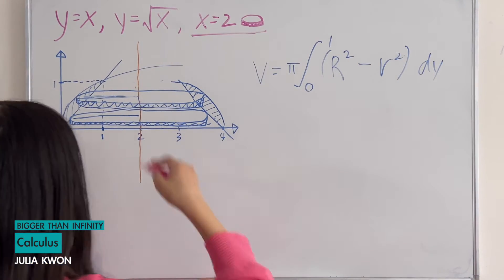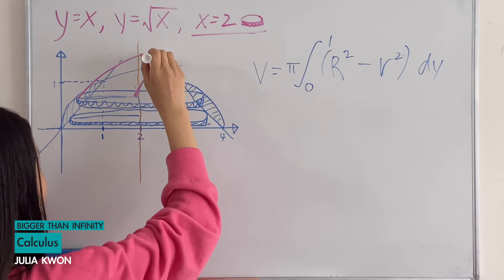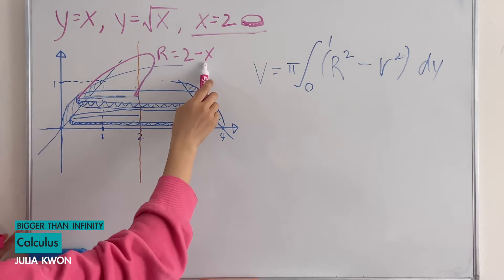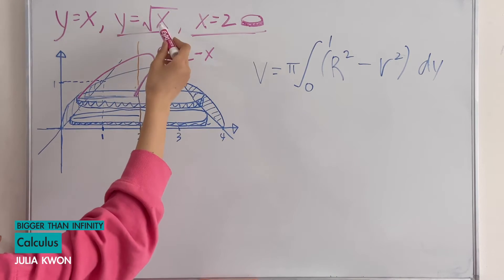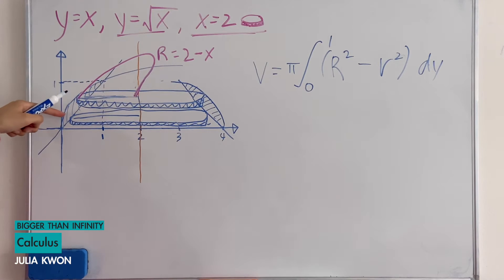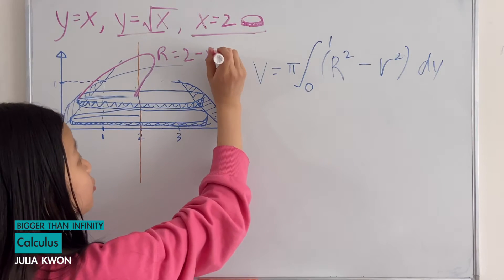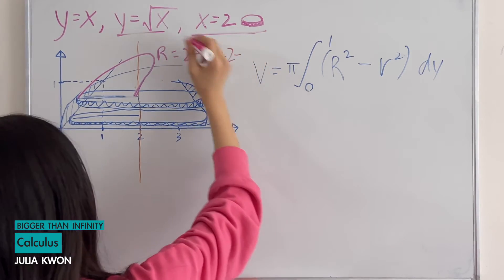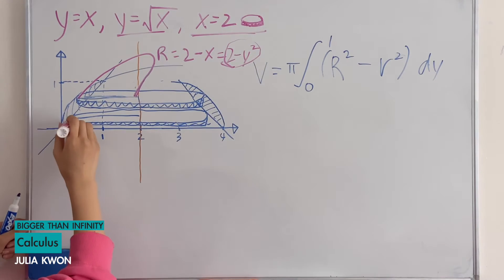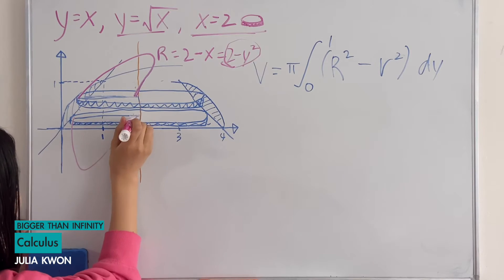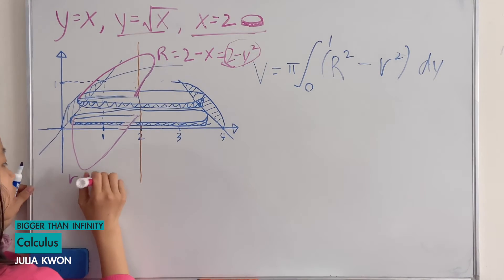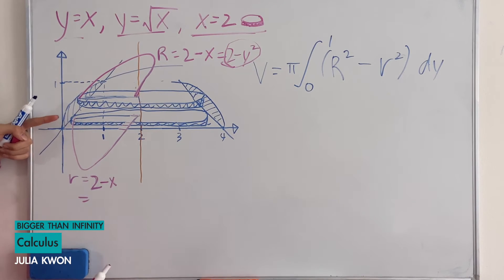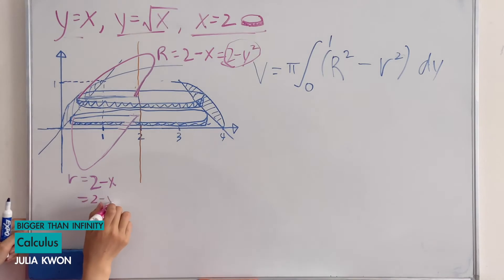The larger radius, capital R, will be equal to 2 minus x. In this case, x is the x from the equation y equals square root of x, because that is the curve it touches. Since we want it in terms of y, we solve for x, giving us x equals y squared. So capital R equals 2 minus y squared. For the smaller disk, lowercase r also equals 2 minus x, except here x equals y, because that disk touches the line y equals x. So we can just replace x with y, giving r equals 2 minus y.